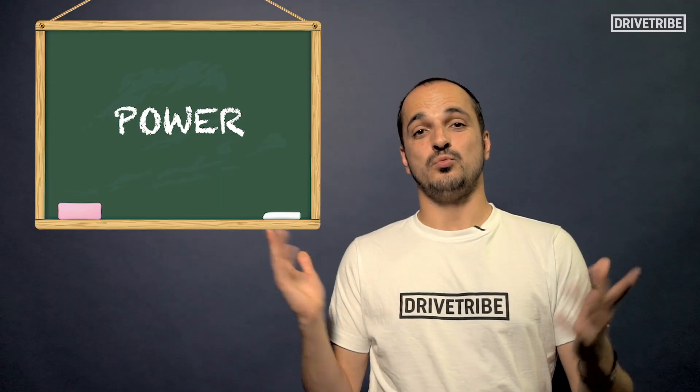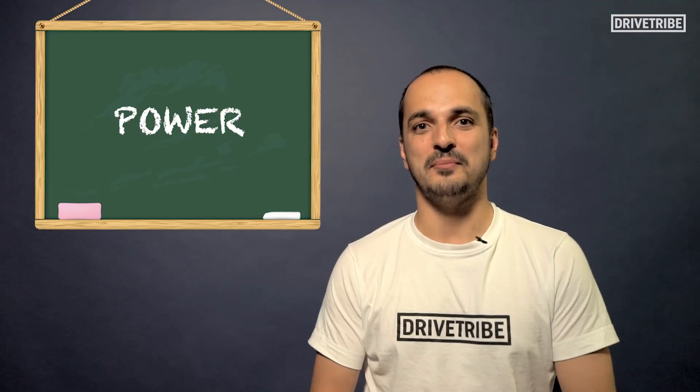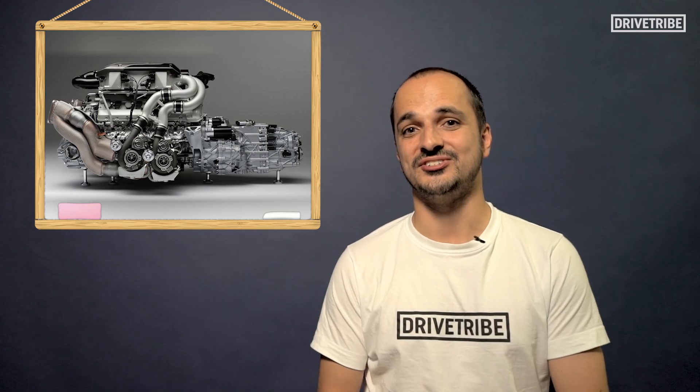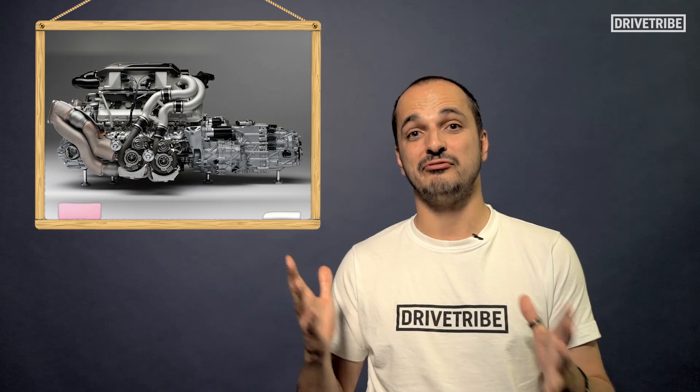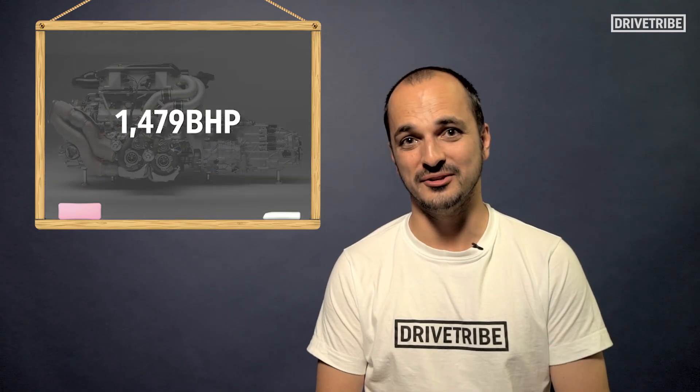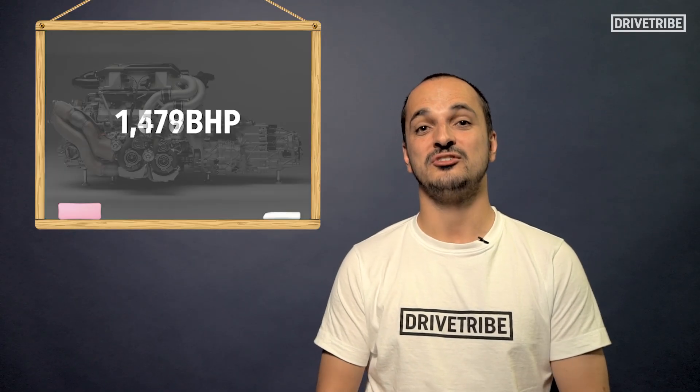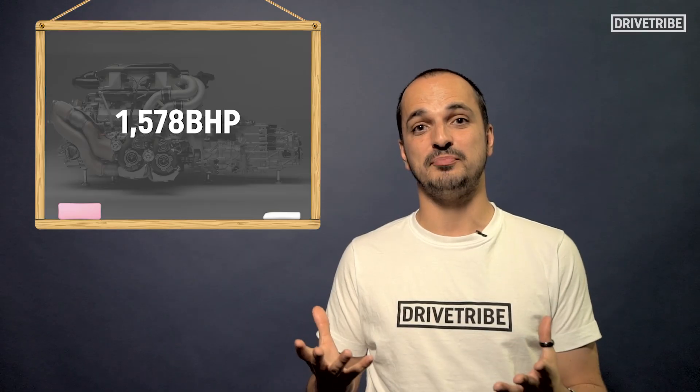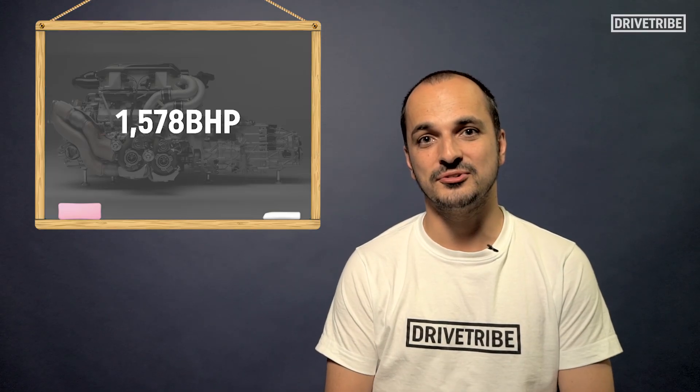Aerodynamic efficiency is one thing, but you need the power to match it if you're going to reach 300 miles an hour. So Bugatti took the Chiron's W16 engine and uprated it from the standard 1479 brake horsepower to 1578. Now that may not seem like a massive power hike, but it was enough to get it across the line.